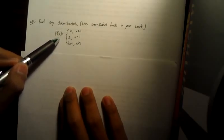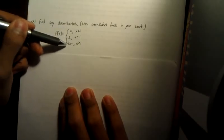This is usually used when you're given a piecewise function and you're asked to find any discontinuities, which is why it's in the same section as the continuity section. Here I have an example: find any discontinuities, use one-sided limits in your work. I'm given a piecewise function where f of x equals these three situations.